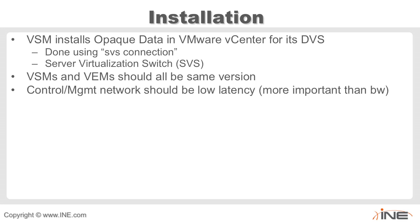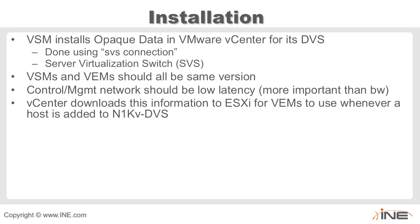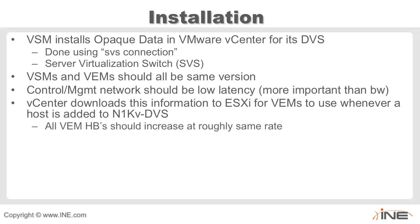Your control and management networks should be quite low latency — this is actually more critical than bandwidth itself. vCenter downloads information into ESXi for the VEMs to use whenever a host is added to the Nexus 1000V distributed virtual switch. All VEM modules' heartbeats should increase at roughly the same rate. You can use the command 'show module virtual VEM counters' to see the heartbeats and verify they are increasing at the same rate — this tells you if they're connected and staying connected.